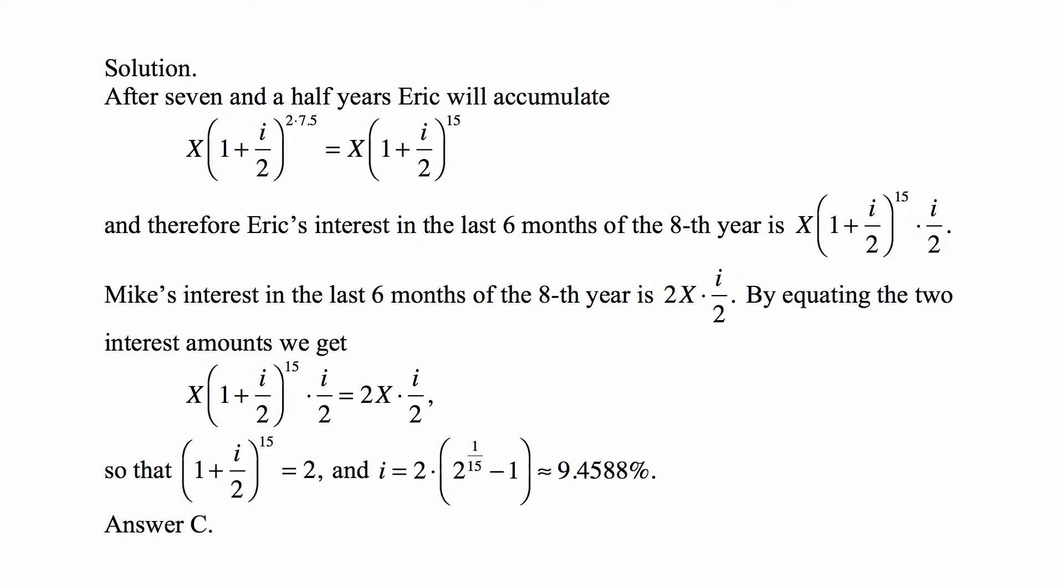And then in the last half a year of the eighth year, this accumulated amount will be multiplied by I over 2 if you're calculating the interest on it. So the I over 2, the effective rate over the next six months, times that amount.